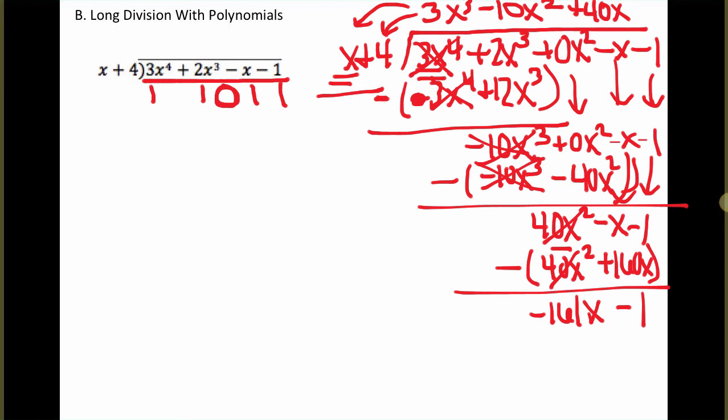Now notice these still have the same degree. So we have to do it yet another time. x multiplied by what gives us negative 161x? It's negative 161. So we'll multiply each of these by negative 161 and then subtract. So we get negative 161x. And then negative 161 multiplied by 4 is a negative 644. When we subtract the x's, they cancel. And then negative 1 minus a negative 644 is a positive 643. So that will be our remainder because the degree is less than the degree up here.